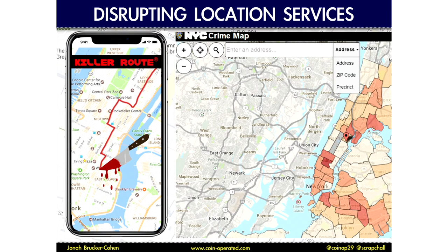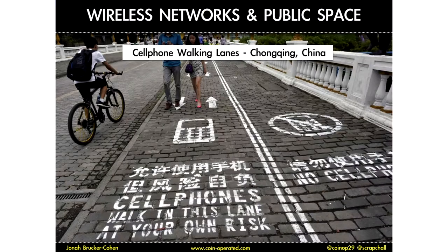I did a project on disrupting location services. This is a GPS app that takes you through the most dangerous parts of the city to get you to your location — it tracks crime data and makes sure you get through the worst parts to get there — looking at how disruption of those location services would fit.